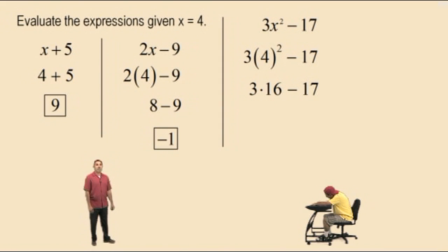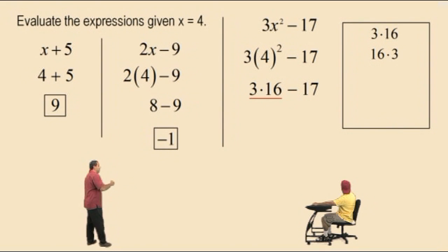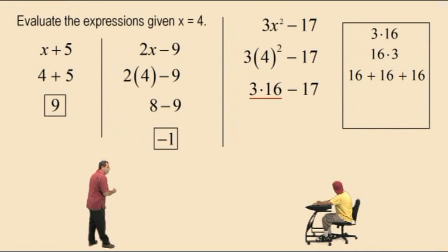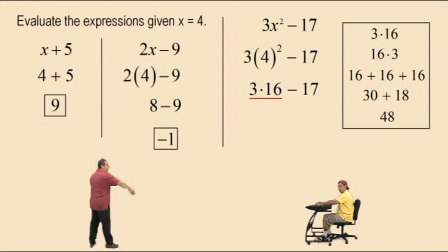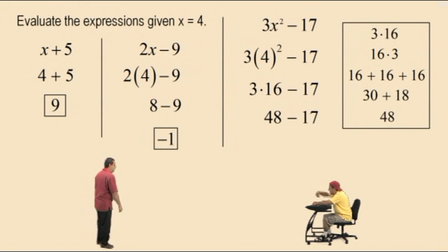How do we do 3 times 16 without a calculator? You can use a vertical format, or let's try some mental math. Pay attention, Charlie. 3 times 16 is the same as 16 times 3 by the commutative property for multiplication. 16 times 3 means 16 plus 16 plus 16. In expanded form, 16 is 10 plus 6. Add the tens: three tens gives us 30. Add the sixes: 18. So the answer is 48 — all without a calculator! So you calculator kids better practice your multiplication. Now, 3 times 16 is 48, subtract 17. What's 48 subtract 17, Charlie? 31. Very nice.